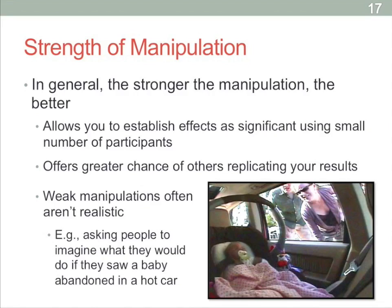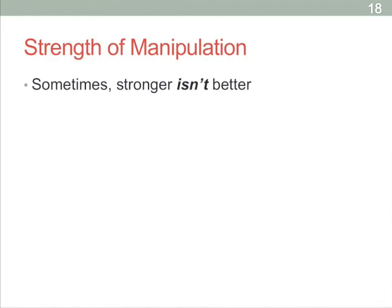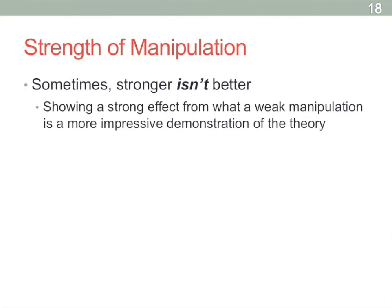Basically, you want strong manipulations to mirror real-world manipulations. There are some instances though in which stronger isn't better and a weaker manipulation might be preferable. They're rare, but they can come up. For one thing, if you can show a strong effect from a weak manipulation, that might actually be a really good test of the theory. If you can get a very big behavior change with a very small difference between groups, you're showing how important that small difference can be.